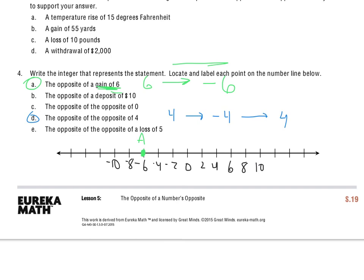So I started with positive 4, so I was right here. The opposite of that is the same distance away, so that's the opposite. And then I'm going to find the opposite of this number, which sends me back to 4. So it's going to be right here at a positive 4. And I'll mark that with D.